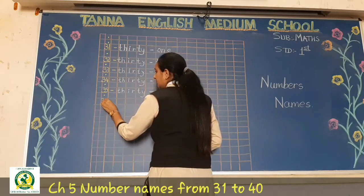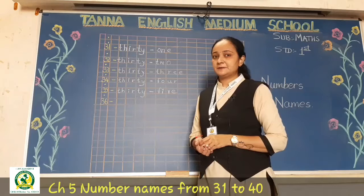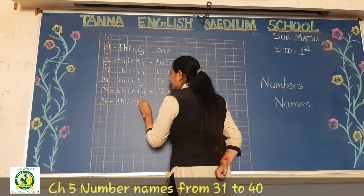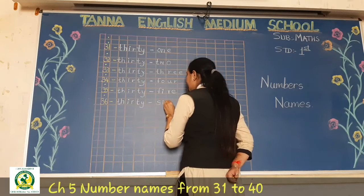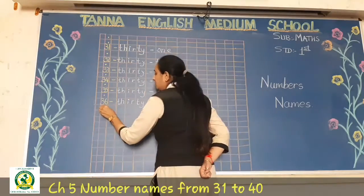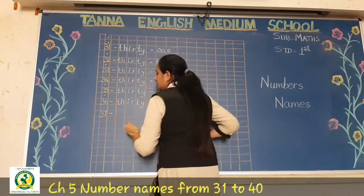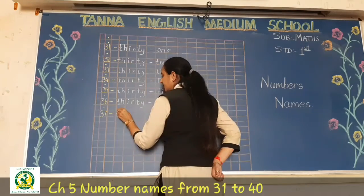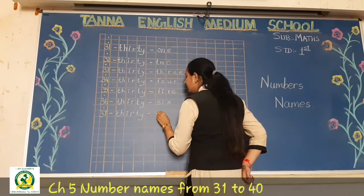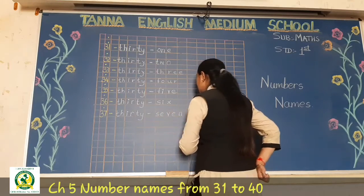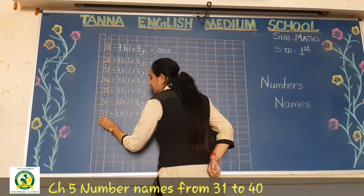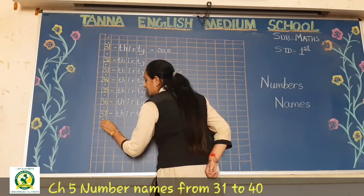Students, are you writing with me? Very good. Then write 36 — T-H-I-R-T-Y and S-I-X for 6. Now 37 — write T-H-I-R-T-Y for 30 and the spelling of 7: S-E-V-E-N. Done.